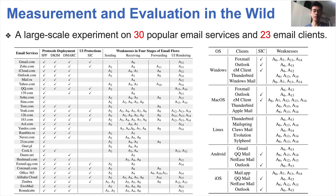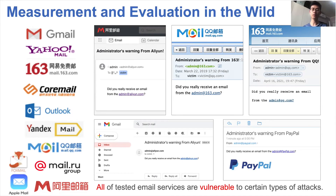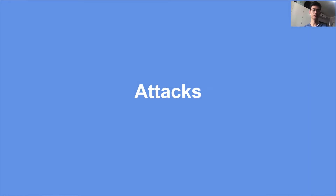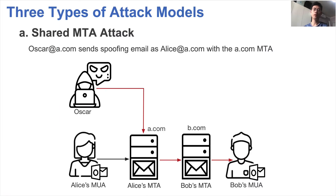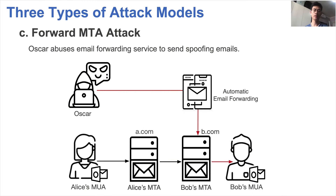We believe these security issues can expose a wide range of common users to threats. The results show that all tested services are vulnerable to certain types of attacks, including reputable services such as Gmail and Outlook. There are three common attack models. The first is a shared MTA attack, where Oscar has an email account different from Alice's, and can send spoofing emails through the MTA of a shared service by modifying the MAIL FROM, FROM, or username headers. The second is a direct MTA attack, where Oscar sends spoofing emails through his own email server with arbitrary sender headers. The third is a forwarding MTA attack, where Oscar abuses email forwarding servers to send spoofing emails.